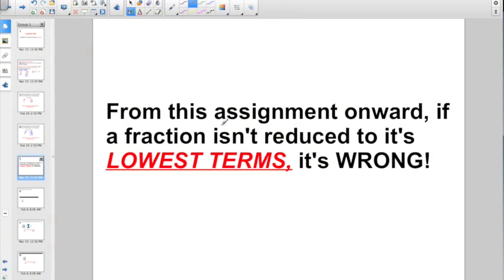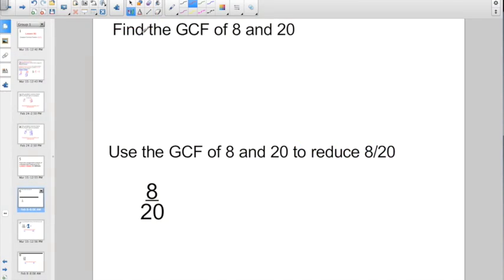So, from this assignment onward, if a fraction isn't reduced to its lowest terms, it's going to be marked wrong. You can still go back and get half credit by reducing it more, but they're going to start getting trickier, and you want to make sure you're reducing to the lowest terms.